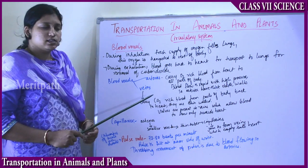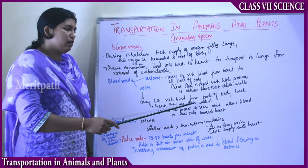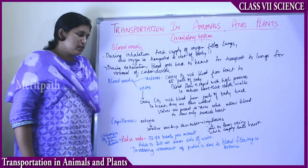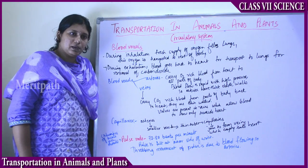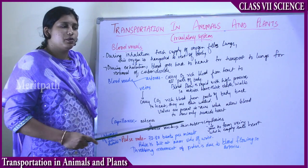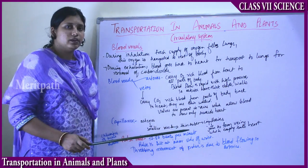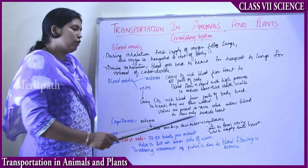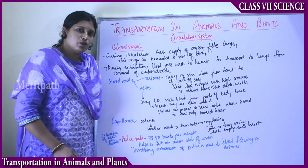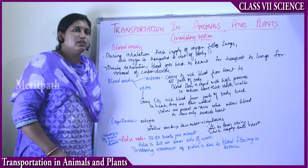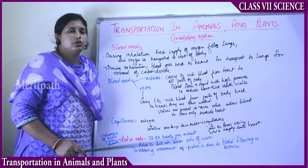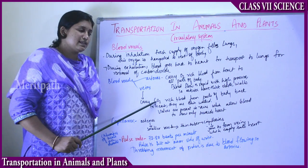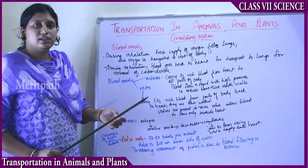Veins carry carbon dioxide-rich blood from parts of the body back to the heart — the opposite of arteries. They are thin-walled and do not carry blood with much pressure. Walls or valves are present in the veins which allow blood to flow only towards the heart. Veins are always indicated with blue color in diagrams.